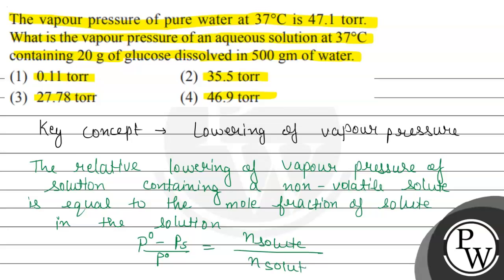Moles of solute. Here p0 represents the vapor pressure of pure solvent. And we have to calculate this ps. The pure water vapor pressure given means p0 value is 47.1 torr.